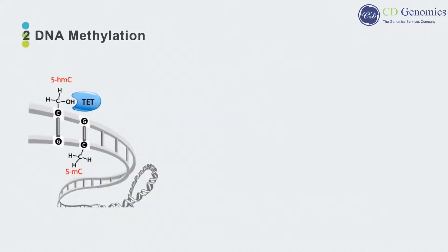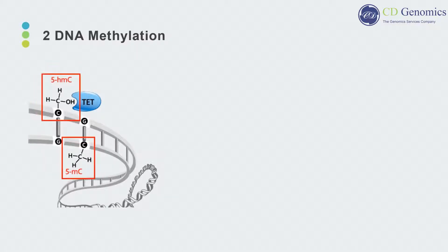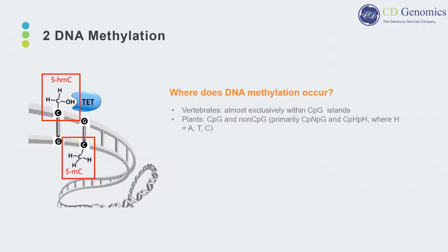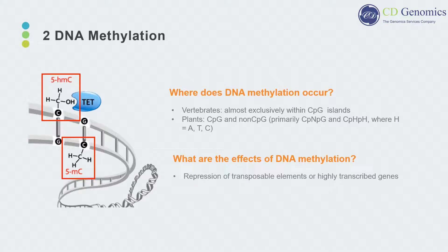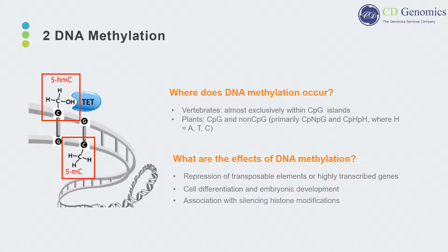DNA methylation occurs on the 5C position of cytosine residues to yield 5-methylcytidine. In vertebrates, this occurs almost exclusively at CpG sites, although non-CpG methylation does occur in embryonic stem cells. DNA methylation is a robust transcriptional repressor — it can silence transposable elements, regulate splicing, and suppress activity of highly transcribed genes. DNA methylation plays a role in cell differentiation and embryonic development, and also associates with silencing histone modifications, leading to chromatin compaction and gene repression.